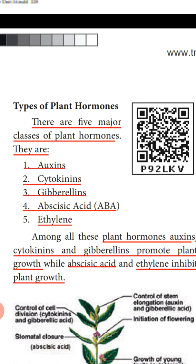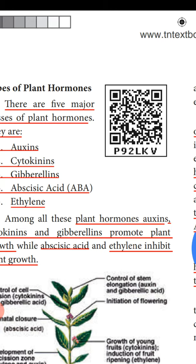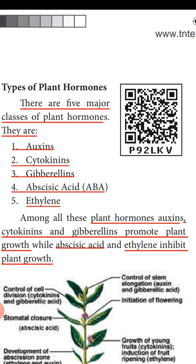There are five major classes of plant hormones: auxins, cytokinins, gibberellins, abscisic acid, and ethylene. Among these, auxins, gibberellins, and cytokinins promote plant growth — they induce and support growth, so they are called growth promoters. Whereas abscisic acid and ethylene inhibit the growth of the plant — they stop the growth — so they are called growth inhibitors.